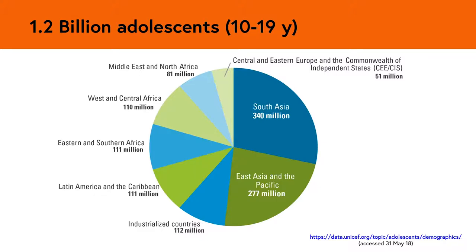More than half of all adolescents globally live in Asia. In absolute numbers, South Asia is home to more adolescents — around 340 million — than any other region. It is followed by East Asia and the Pacific, with around 277 million. The adolescent population of either of these regions dwarfs that of any other region in the world.